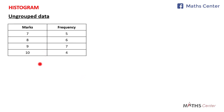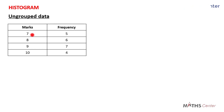Ungrouped data. Let's use this as an example. This table shows the marks scored by some students in a test. Those who scored 7 are 5, those who scored 8 are 6, those who scored 9 are 7, and those who scored 10 are 4. This is an ungrouped data because individual marks are given — we were not given intervals or groups.